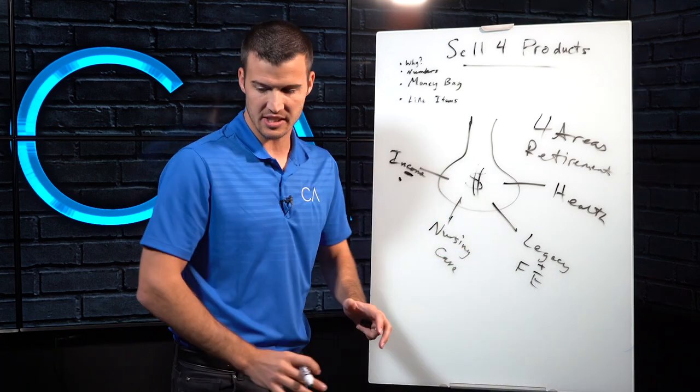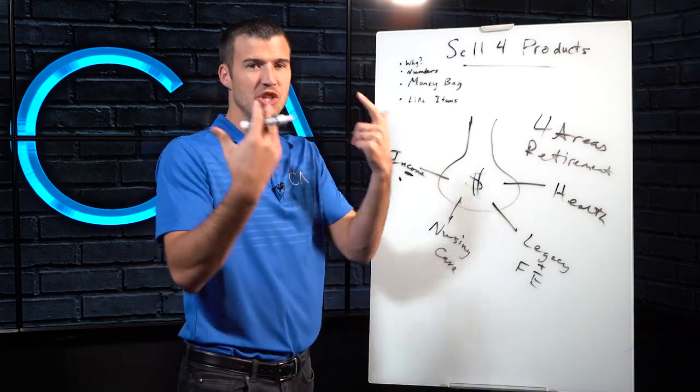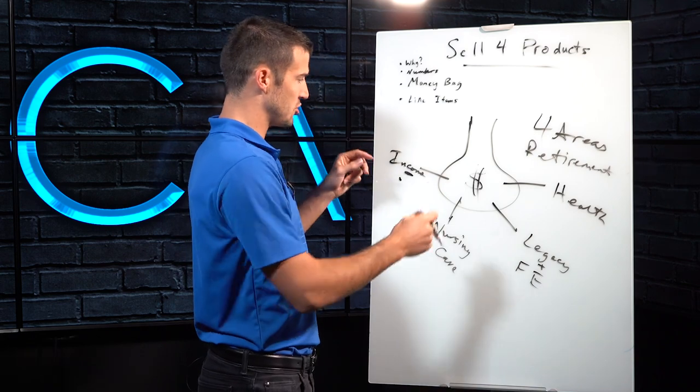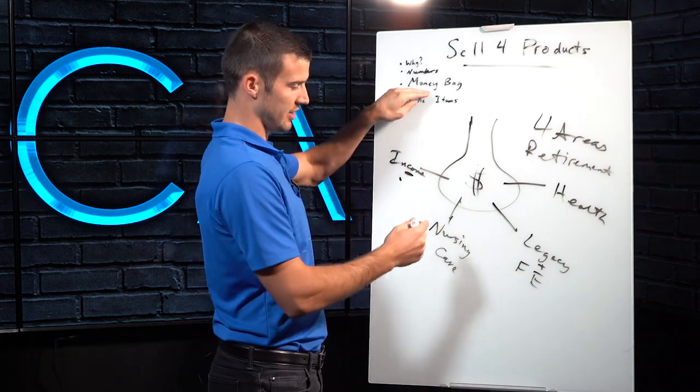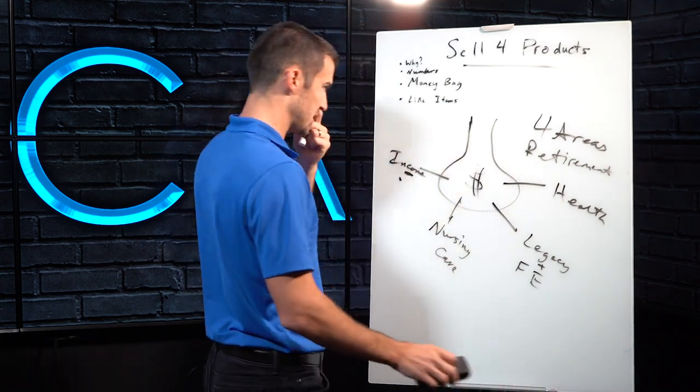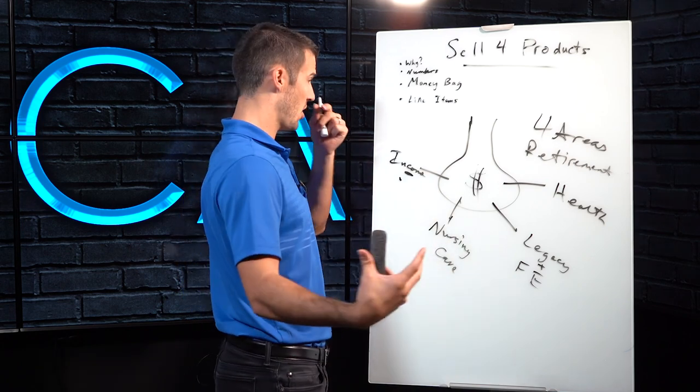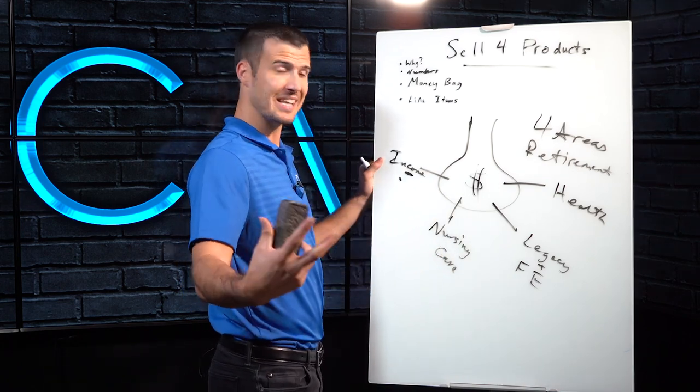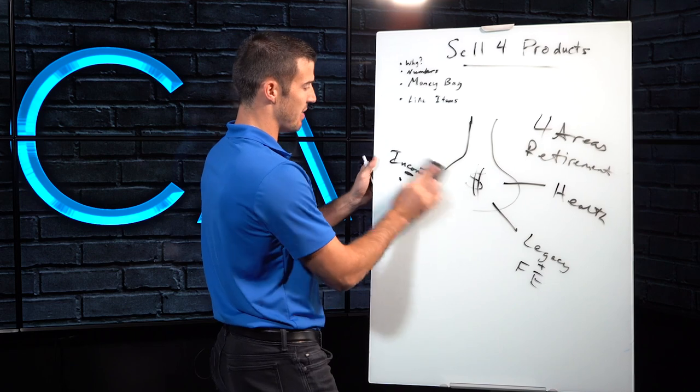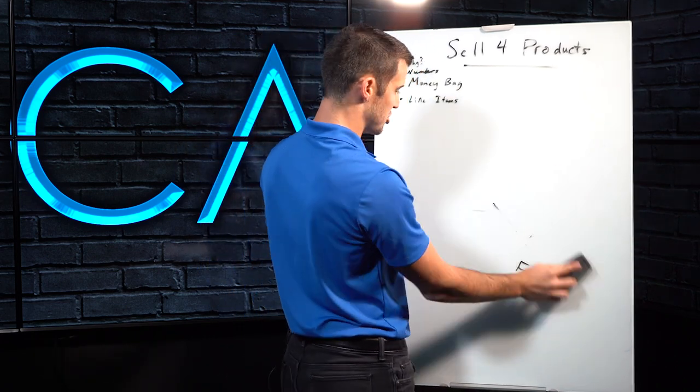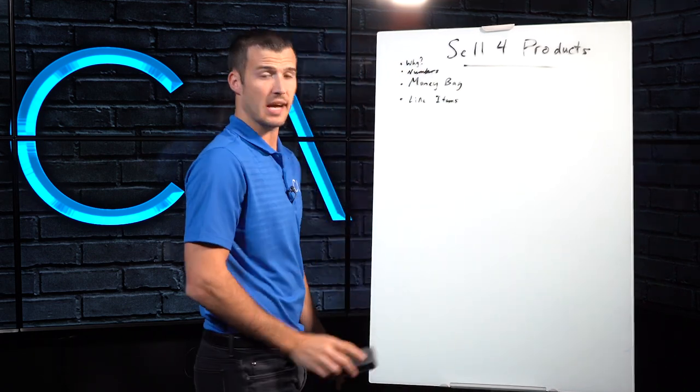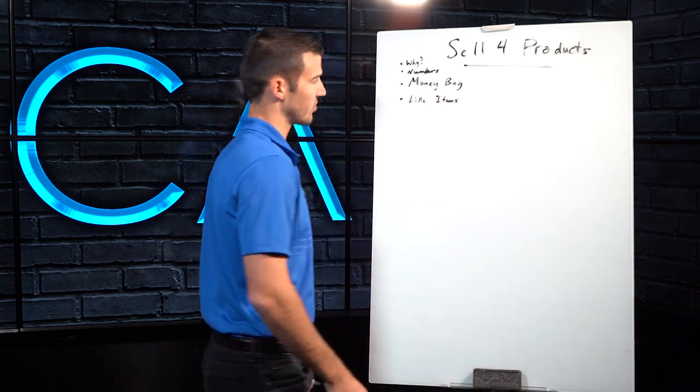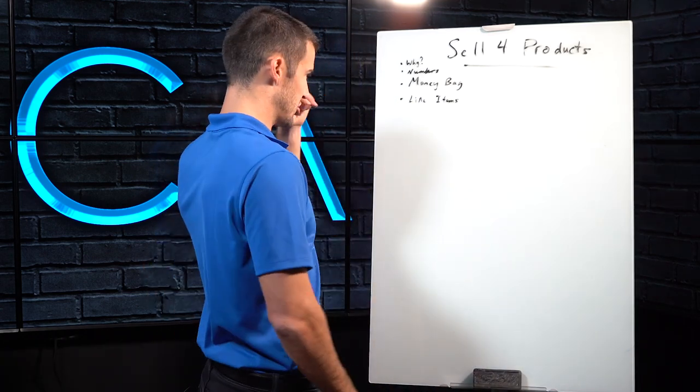So we use this as a fact finding tool, just to learn more about these different things. So when it comes to selling four products, that's a great way to find what type of products you should be pitching or selling is simply by doing this money, what I call the money bag presentation. I had a manager that taught me this long time ago and I'll give him credit for it. Thank you, Sean.